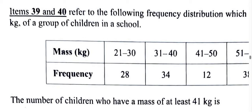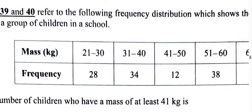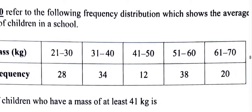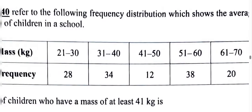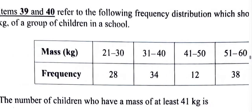Alright, so we're told that questions 39 and 40 refer to this diagram that we have here. It's a frequency distribution table showing the average mass of a group of children in a school.